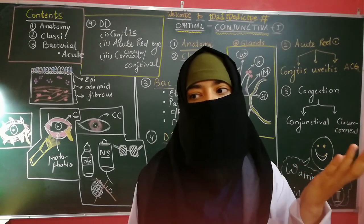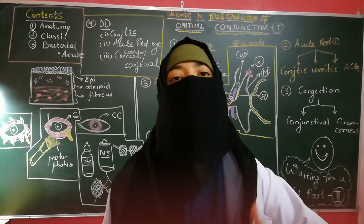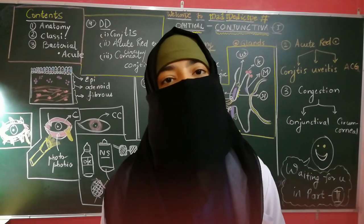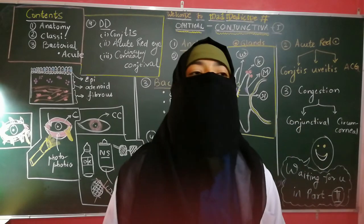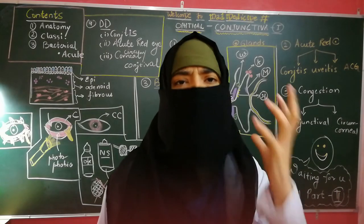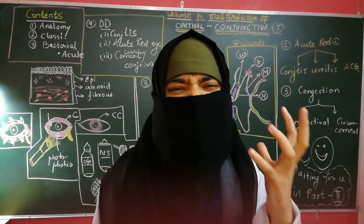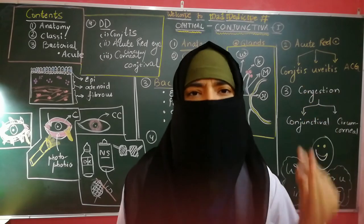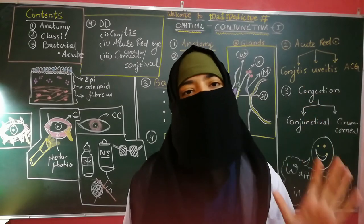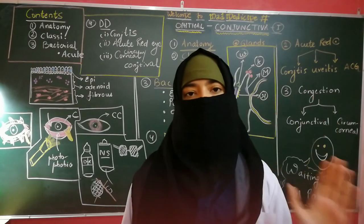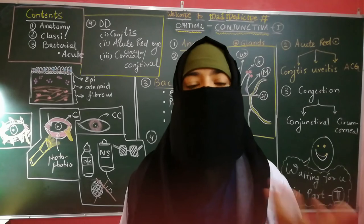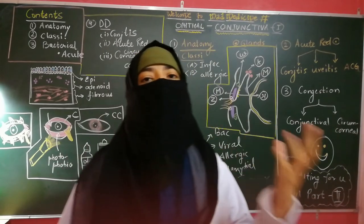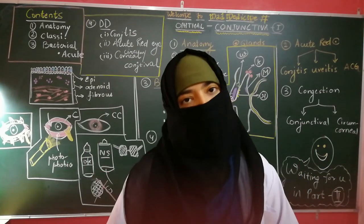Pre-auricular lymphadenopathy is associated with viral and bacterial conjunctivitis. Chemosis — swelling of the conjunctiva — is usually seen in bacterial and allergic conjunctivitis. These features help in making a differential diagnosis between the most common and important causes of conjunctivitis.